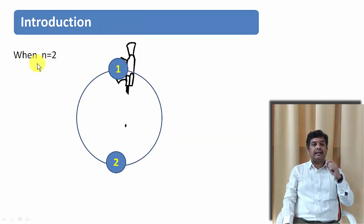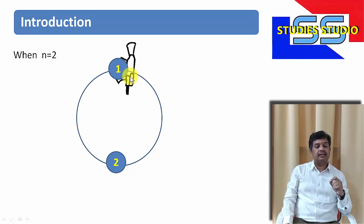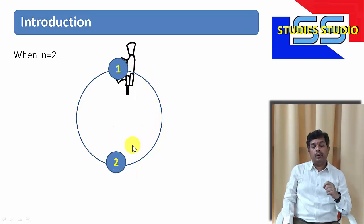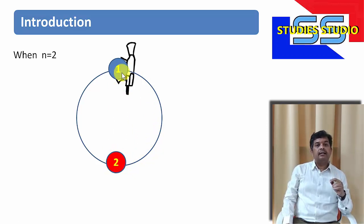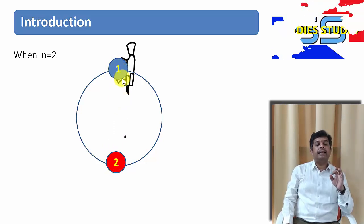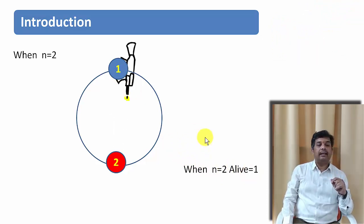This problem can be understood by an example. Let us assume there are two persons in a circle. The first person is having the gun and he is trying to kill the person immediately to his right. Person 2 is immediately to his right, so person 2 got killed. Person 1 is alive and gets freedom. So when N equals 2, the first person is alive.